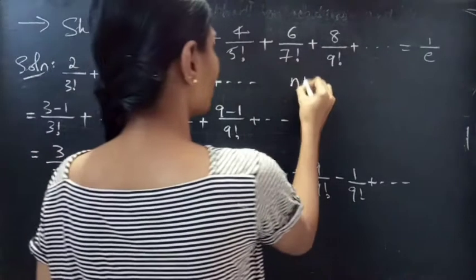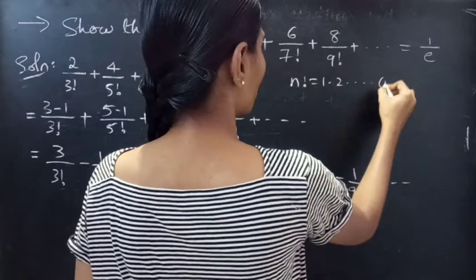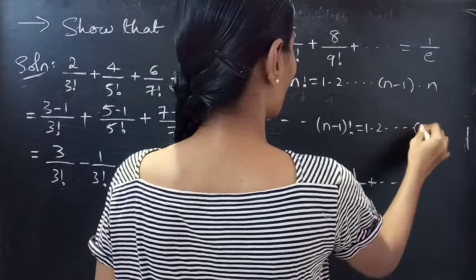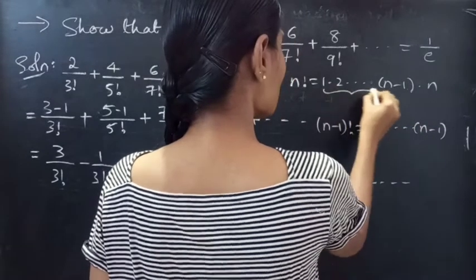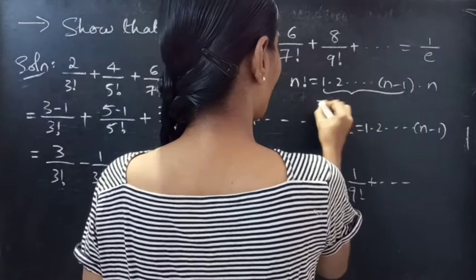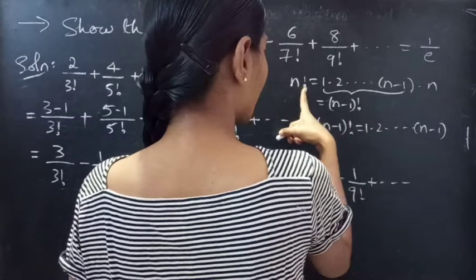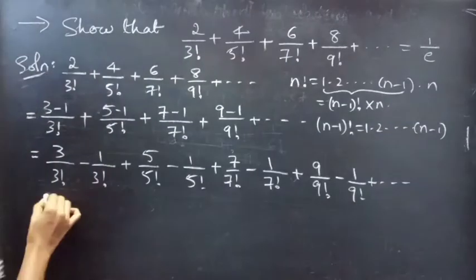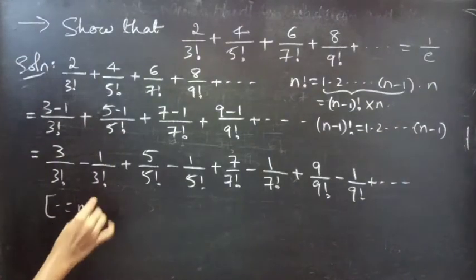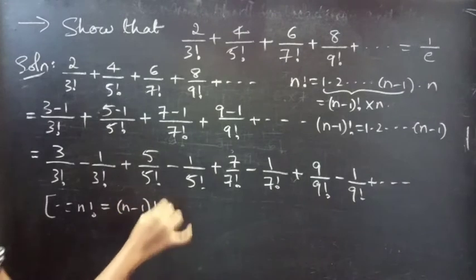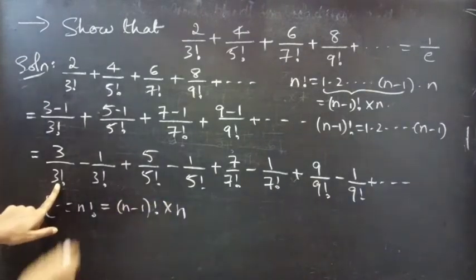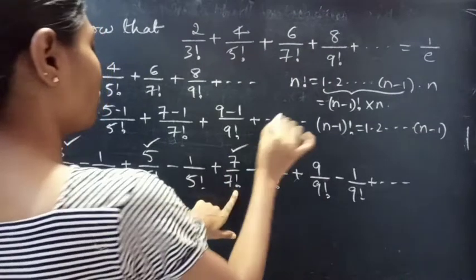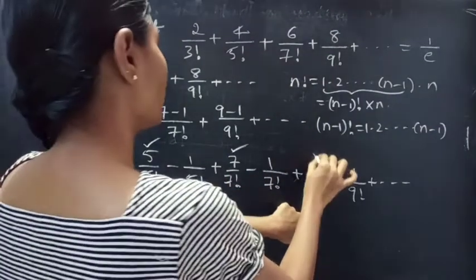Since we know that n! = 1×2×...×(n-1)×n and (n-1)! = 1×2×...×(n-1), we can write n! = (n-1)! × n. So we can replace 3! from the first term, 5! from the third term, 7! from the fifth term, and 9! from the seventh term.